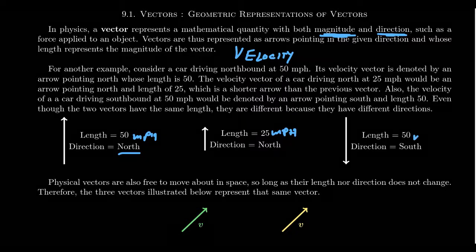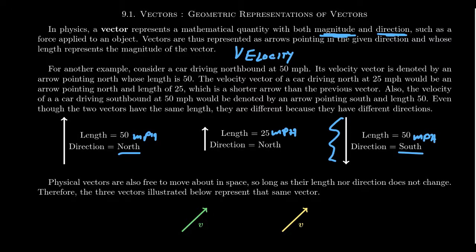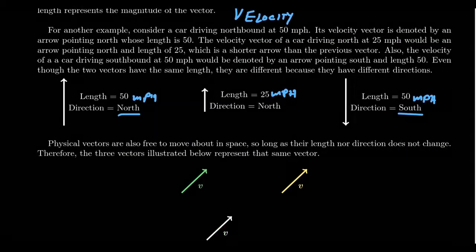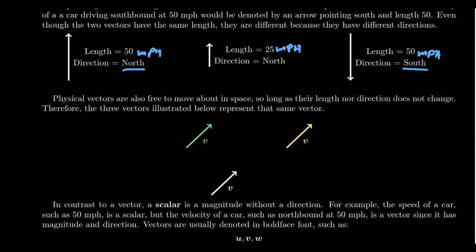We could also go 50 miles per hour due south, in which case the vector has the same length but points in the opposite direction — the arrowhead points downward for south versus upward for north. Vectors going in opposite directions have arrowheads on opposite sides. We can go in any direction: northeast, southwest, etc. An important note: for this lecture series, we'll focus only on two-dimensional vector situations, though in real life vectors often require three dimensions.